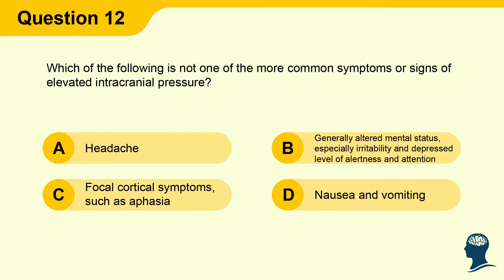Question 12: Which of the following is not one of the more common symptoms or signs of elevated intracranial pressure? A) Headache, B) Generally altered mental status especially irritability and depressed level of alertness and attention, C) Focal cortical symptoms such as aphasia, D) Nausea and vomiting.